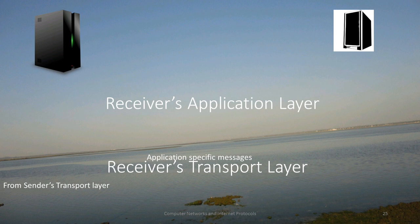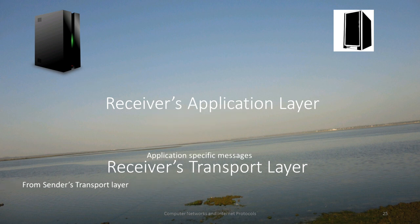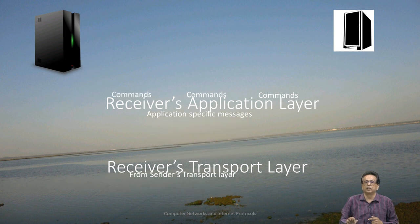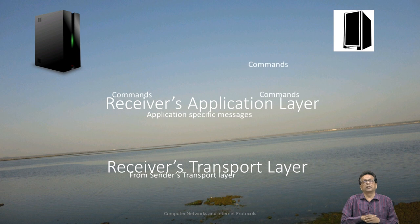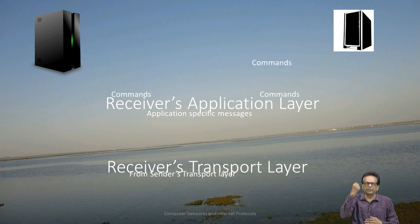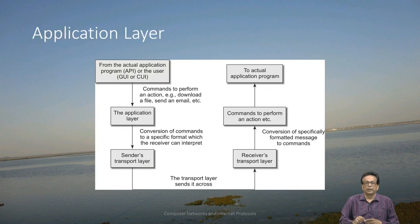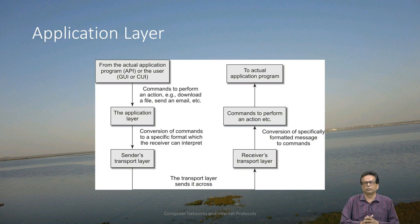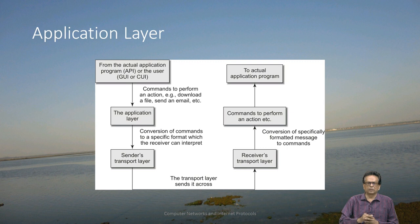The receiver's application layer receives what is sent from the sender's transport layer. Once it is received, it generates application-specific messages, and those application-specific messages are sent to specific commands. For example, a URL request will be moved to a web server, a GET command to FTP, or a Telnet command like 'ls' is moved to the Telnet server. Specific applications will receive those specific commands. There is also something called an application programming interface — for example, if you have used MAPI in Java, you can call it to send mail from your own program. So the application layer takes input and uses the transport layer to send data across.